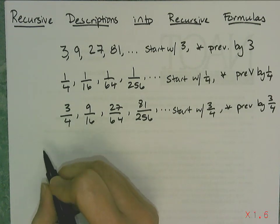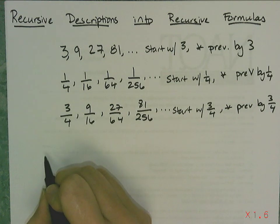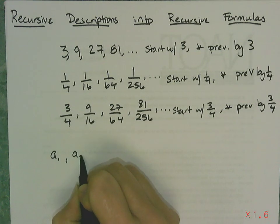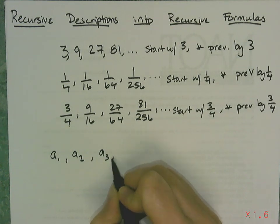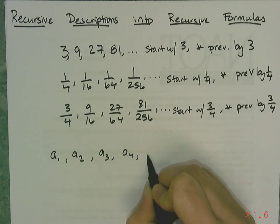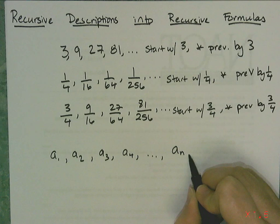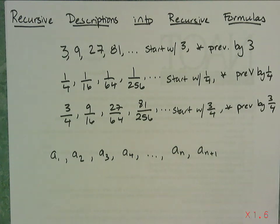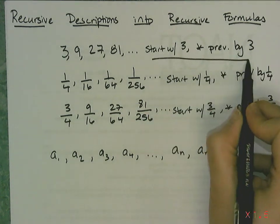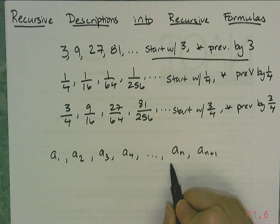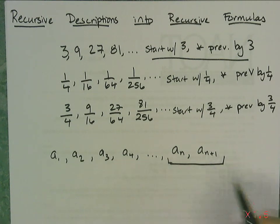In general we say sequences can be defined like this. a₁ is the first term, a₂ is the second term, a₃ is the third term, a₄ is the fourth term, so on and so forth. Some general term, some generic term, would be aₙ. And the next one after that would be aₙ₊₁. If I want to write this rule using a formula, I'm going to have to use these general terms right here.